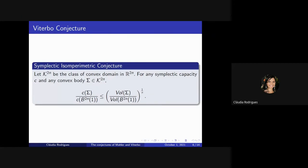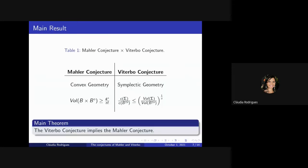Finally, the Viterbo conjecture says: let K be the class of convex domains in R to 2N. Then, for any symplectic capacity C and any convex body sigma, this relation of capacity is less than or equal to this relation of volume. It is the Viterbo conjecture. In sum, the difference between the Mahler and the Viterbo conjecture is, one is in convex geometry and other in symplectic geometry, and with these inequalities.